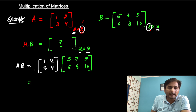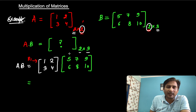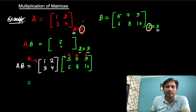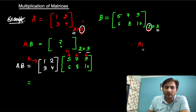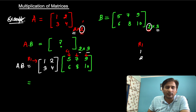First of all we need to take row 1, multiply row 1 with column 1, column 2, and column 3 respectively. So row 1 multiplied with column 1. Row 1 is 1, 2 — if I write it in vertical form, it is 1, 2. And what is column 1? Column 1 is 5, 6.